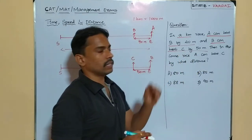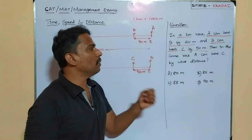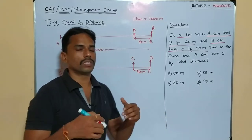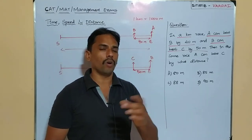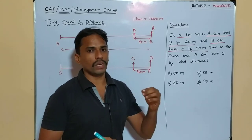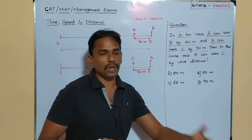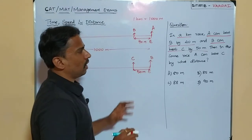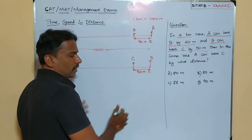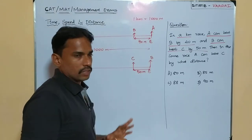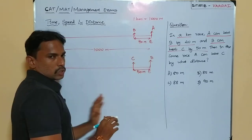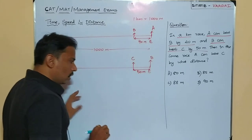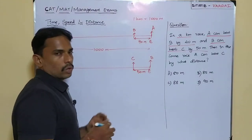The question asks: in the same race where A, B, and C all three are participating, by what distance does A beat C? Once we understand the meaning of each condition, we can carefully put the data together, calculate, and get the answer.